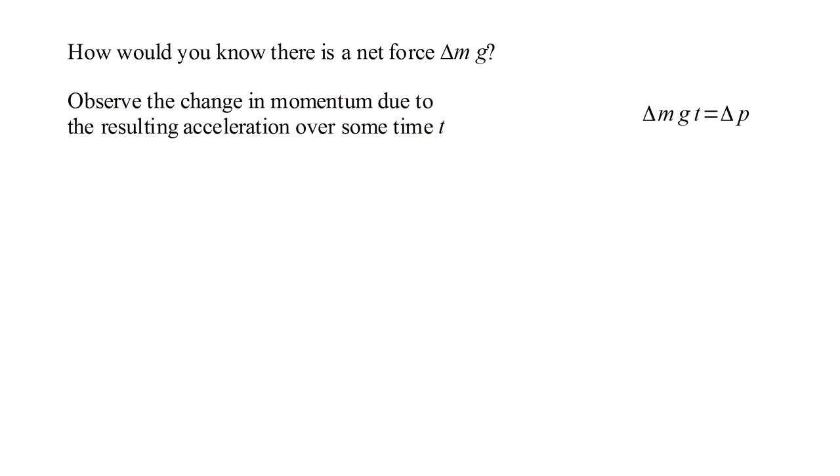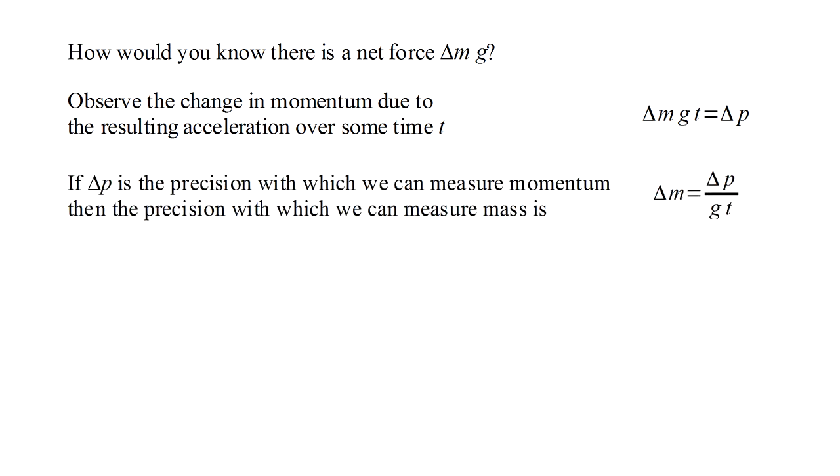That is, the box will start to fall. Turning this around, if delta p is the precision with which we can measure momentum, then the precision with which we can measure mass is delta m equals delta p over g times t. t is the length of time we watch the box looking for signs of acceleration.